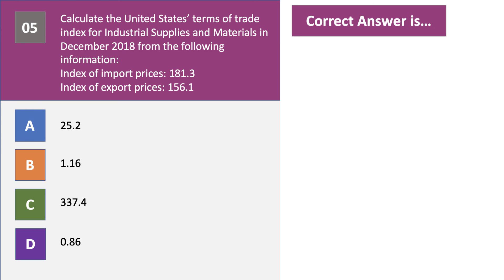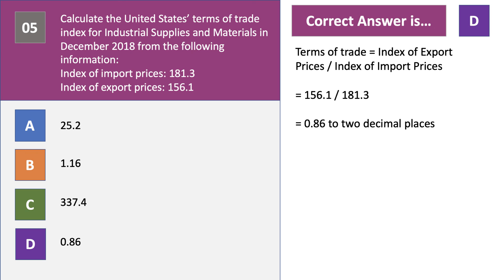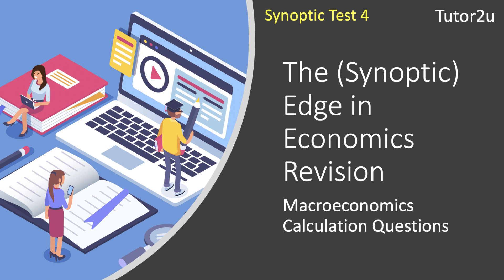The Terms of Trade is one that confuses some students. It's the index of export prices divided by the index of import prices. Therefore the correct answer is D. If you take 156.1 and divide by 181.3, you get 0.86 to two decimal places. There we go — five macro calculation questions. Thank you.